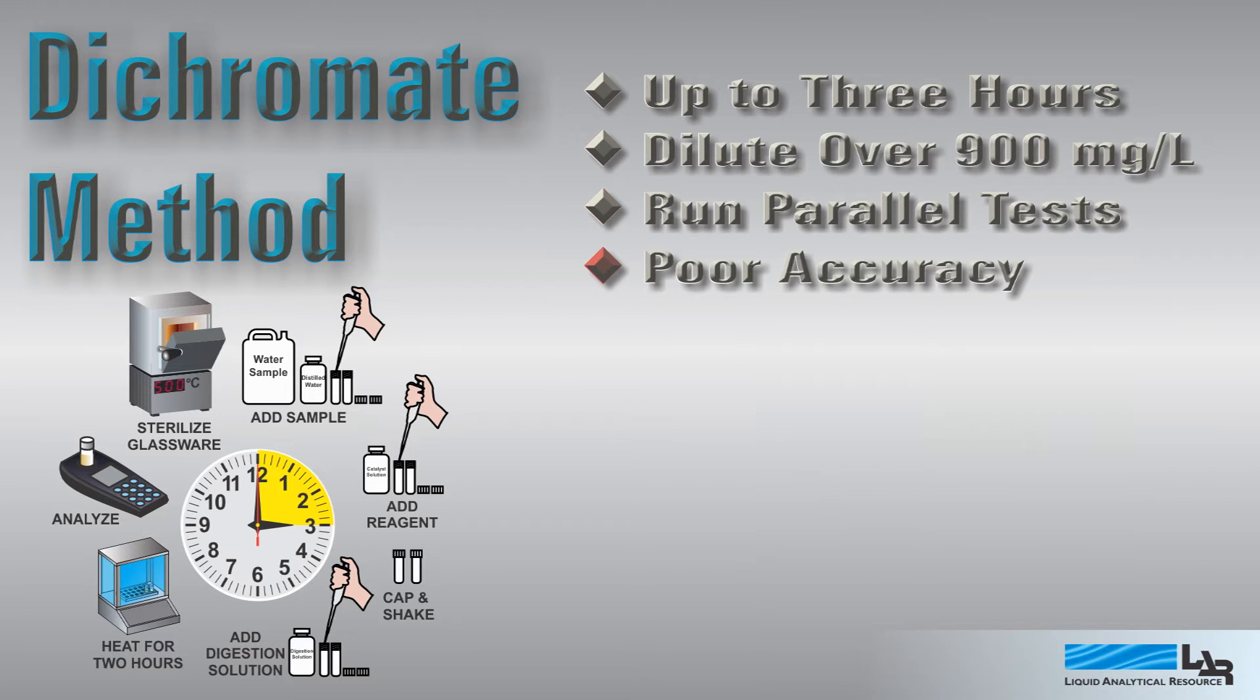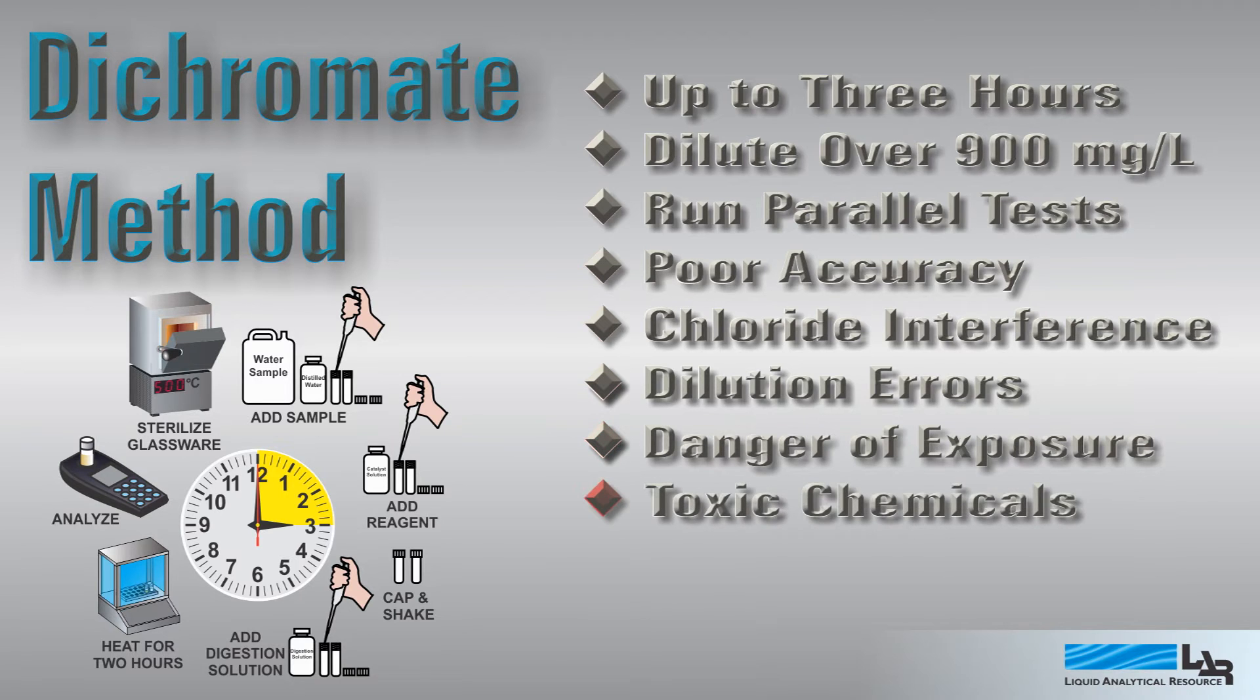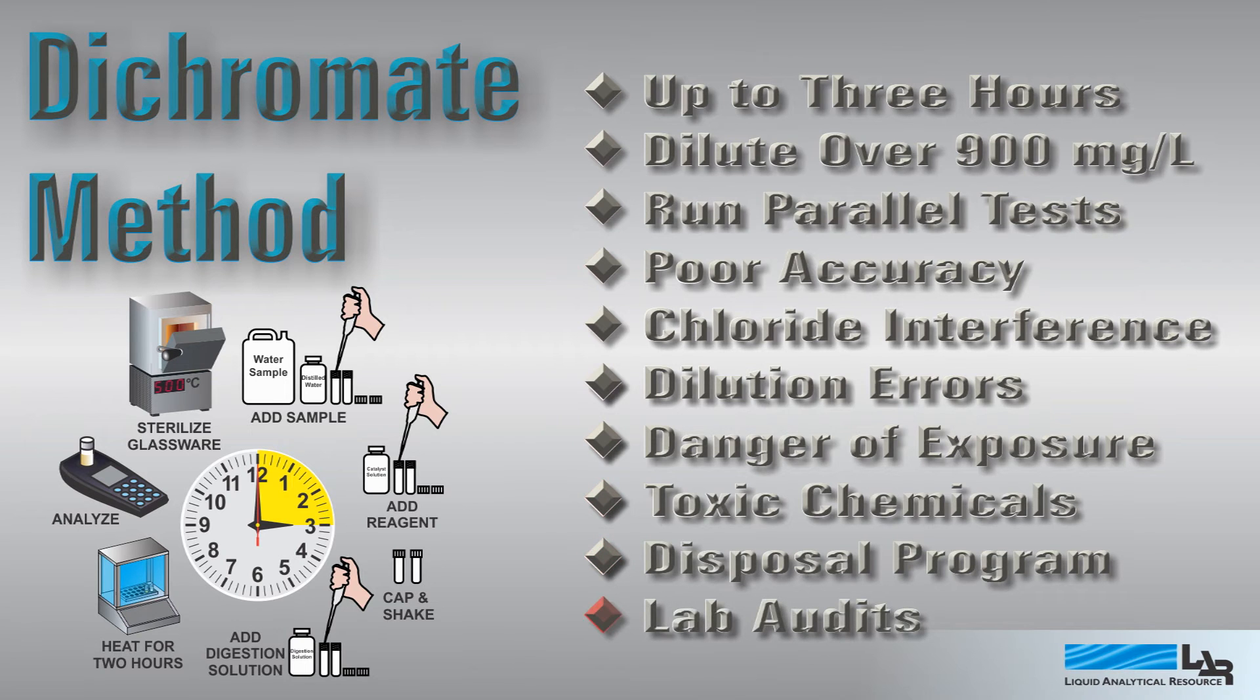Accuracy is only plus or minus 20% due to interferences from chlorides and nitrogen compounds, not to mention dilution errors. And since the test depends on the use of dangerous toxic chemicals, the lab must be audited and must maintain a documented disposal program.